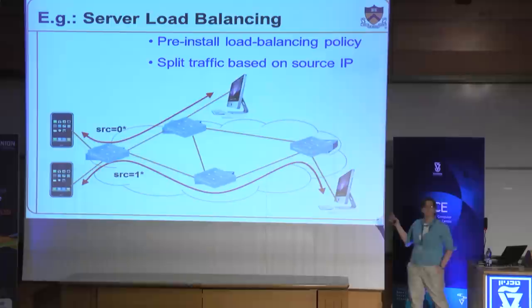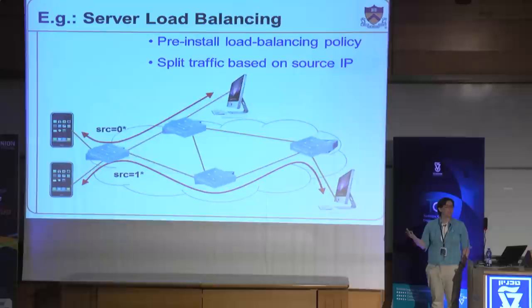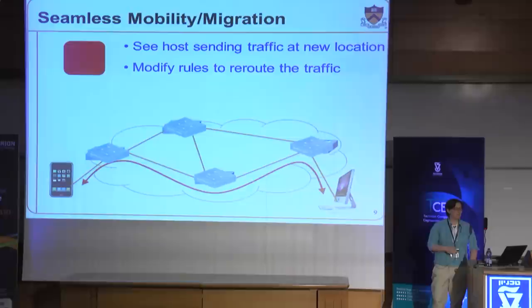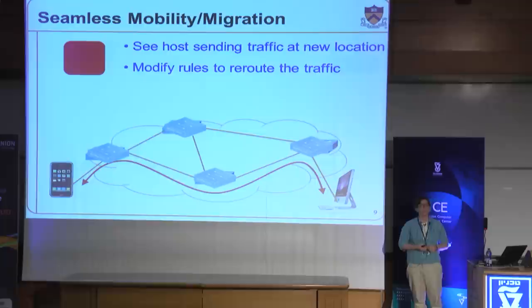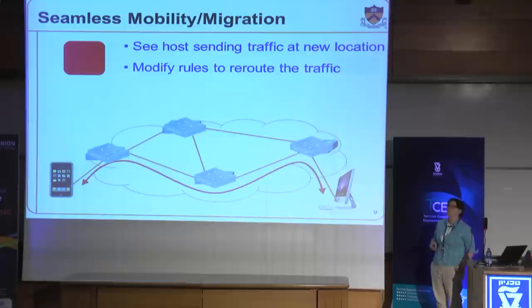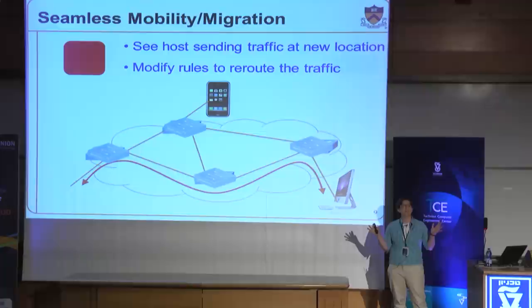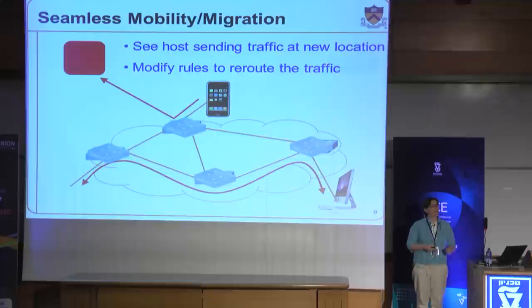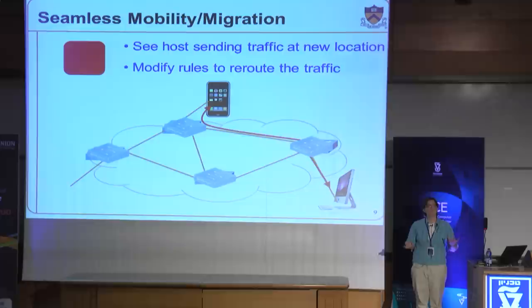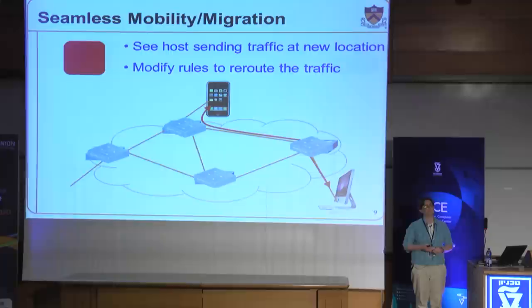In this load balancer case, the controller's not doing very much — when the switches come up it installs these rules, and unless something fails, there's not really anything else to do. A second example is supporting mobility or migration — VM migration in the data center or device mobility in an enterprise. If a host moves to a new location, traffic goes to the wrong location. But if the switch at the new location has a default rule sending unknown packets to the controller, the controller learns where the host is now located and installs new rules directing traffic to the host's new location, without either host knowing the routes have been updated.